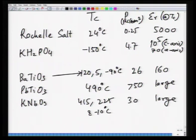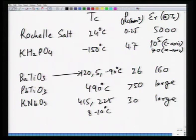Near Tc, the dielectric constant is very high, consistent with the local field theory analysis. Temperatures above room temperature are desirable for applications — the material should be ferroelectric at room temperature. Materials like KH₂PO₄ are not very useful because their Tc is extremely low. In the next class, we will discuss the energetics of ferroelectric materials at the transition — what happens at Tc is a phase transition, and understanding its nature is essential for a complete understanding of ferroelectrics.